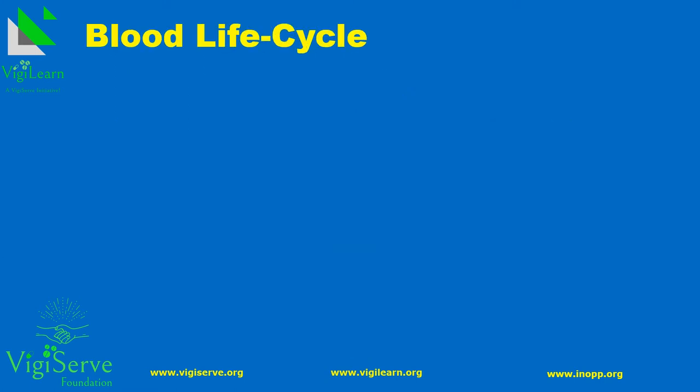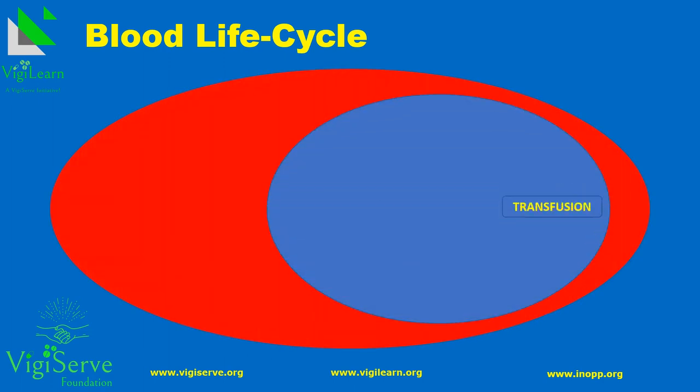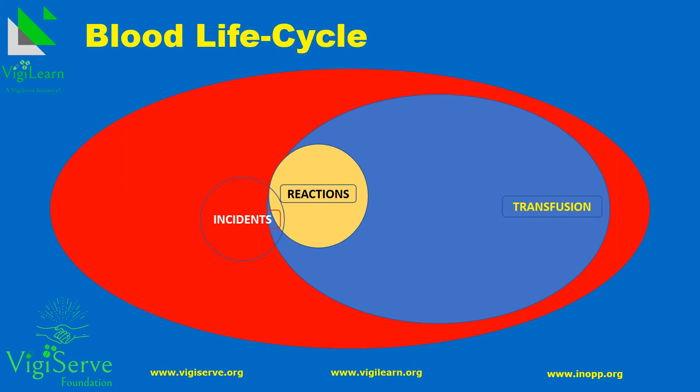Let us learn about the life cycle of blood, that includes donation, storage, transportation, screening, segregation, and transfusion. Blood transfusion is an important aspect that includes the transfusion reactions. Besides, we can even have other incidents in this life cycle. We will now learn in detail about the transfusion reactions.